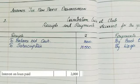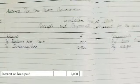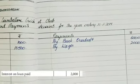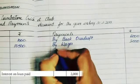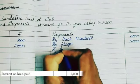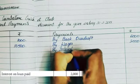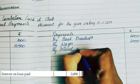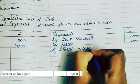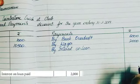Interest on loan paid — since it is a payment, go to the payment side and write 'By Interest on Loan' for 2,000 rupees.